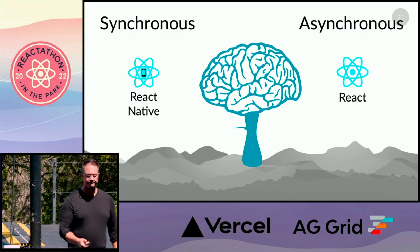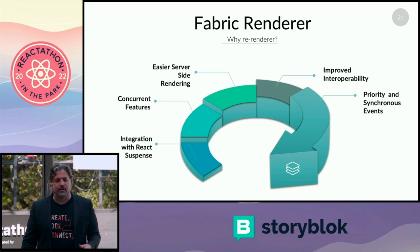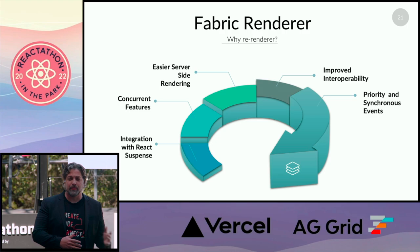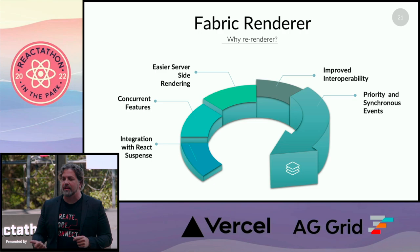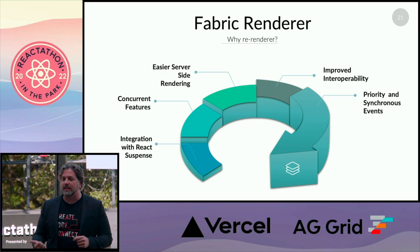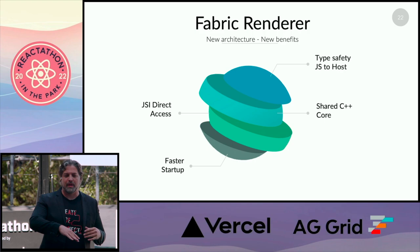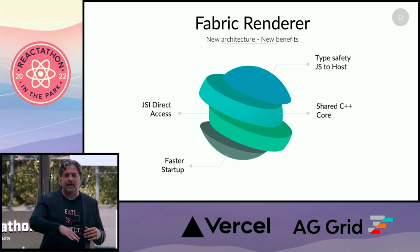That's the biggest thing to take away. Moving forward, everything in React is going to be thinking about these new concurrent features — we don't want to leave React Native behind. We can get deeper into it: re-rendering, rendering engines, integration with suspense, concurrency, easier server-side rendering, improved interoperability, priority, and synchronous events. This brings in the concepts of type safety with JavaScript to native platforms. And here's JSI direct access — this is no longer serializing what's going on.